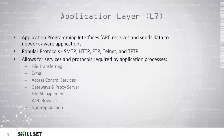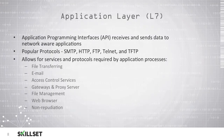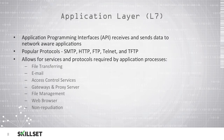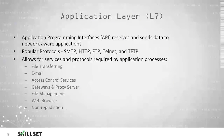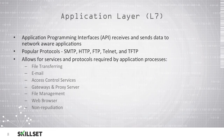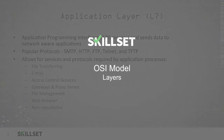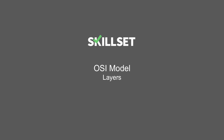There are several different services and protocols that can be required for applications to work correctly, such as file transferring, access control services, email, file management, gateways and proxy servers, web browsers, and non-repudiation so a person cannot deny the activities they performed on a system. This concludes our OSI model layers module.